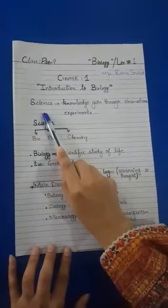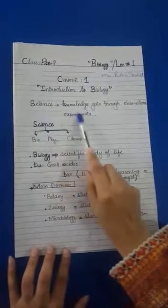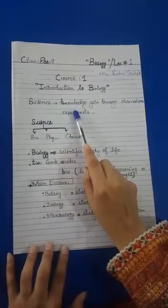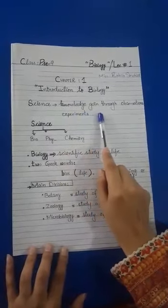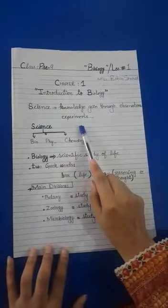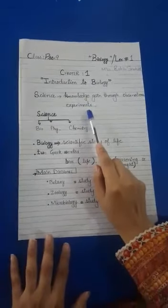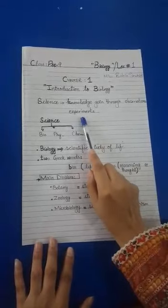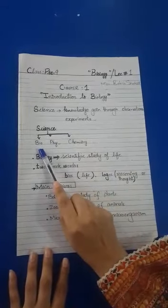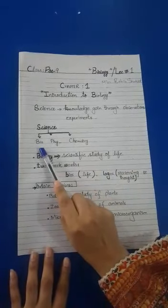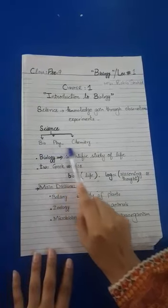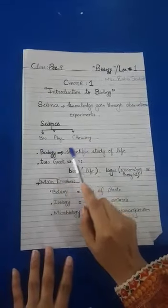First of all, we will see what is science. Science is a knowledge that is gained through different observations and experiments. With the passage of time, science is divided into different subjects like biology, physics, and chemistry.